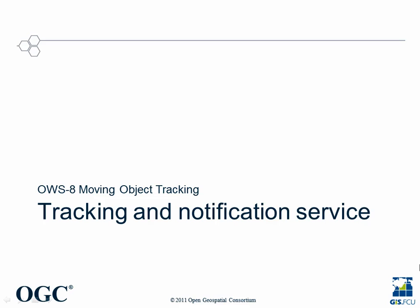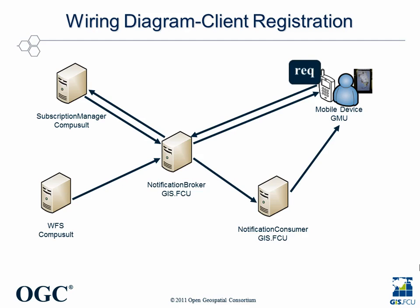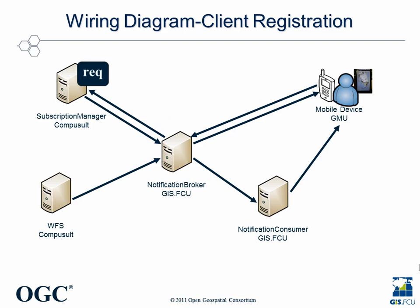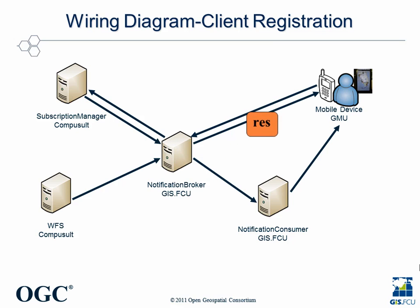OWS 8 Moving Object Tracking – Tracking and Notification Service. In the tracking and notification service mechanism, the client sends a registration request to the notification broker. The broker submits the consumer reference to the subscription manager, gets a registration response, and sends it back to the client.